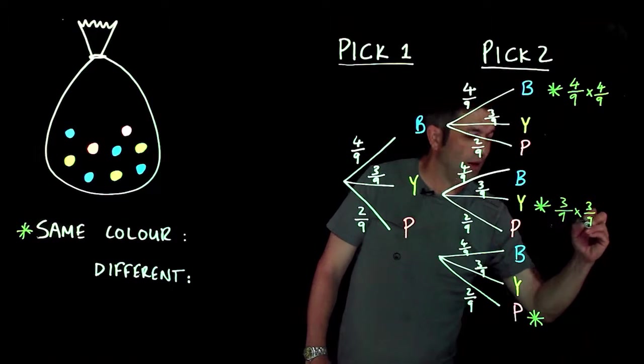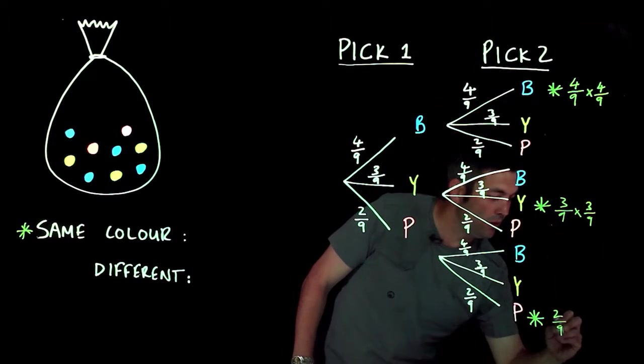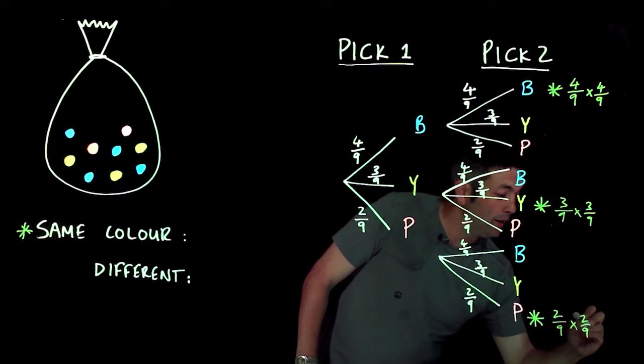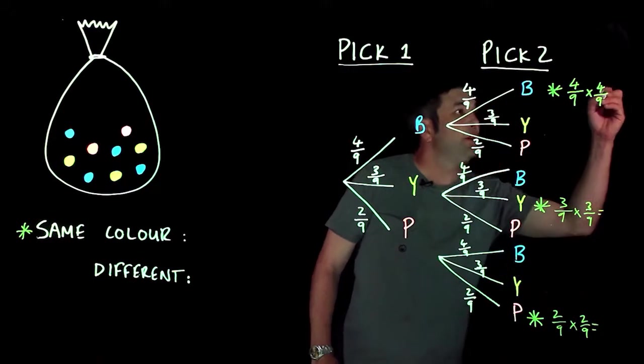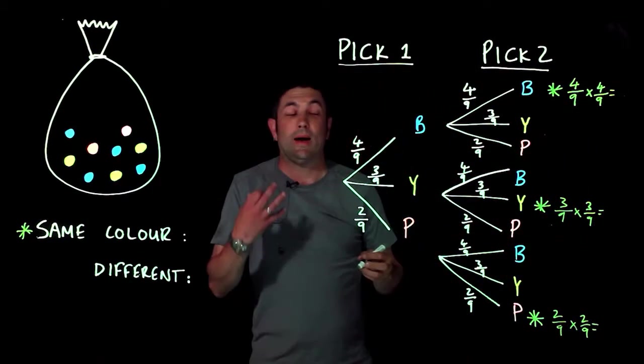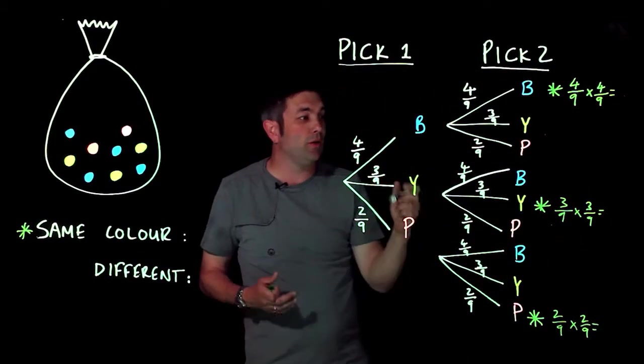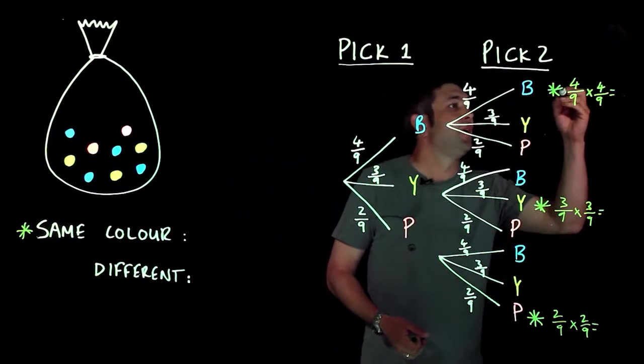Okay, so I'm going to work these out, and this is where you'll see why actually not simplifying the three ninths will make it a little bit easier. So four ninths: 16 over 81. We get 9 over 81. Again I could simplify that but I'm not going to.